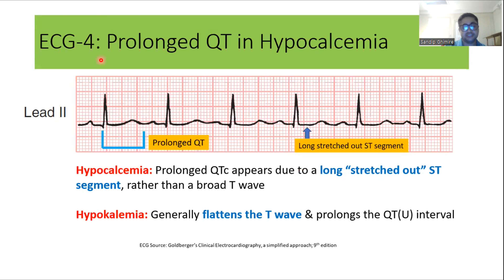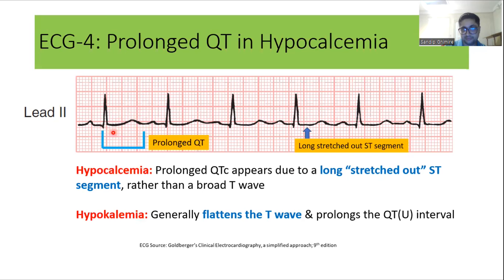This fourth ECG shows findings in hypocalcemia. As you can see, the QT interval is prolonged due to stretching of the ST segment — a classical finding of hypocalcemia. Sometimes there can be a pseudo-prolonged QT interval in hypokalemia, because in hypokalemia there is a T-wave followed by a U-wave, and when these merge they produce apparent QT prolongation that can be confused with hypocalcemia. To differentiate, look at the ST segment: in hypocalcemia, QT prolongation is due to stretching of the ST segment, not changes in T-waves or U-waves.